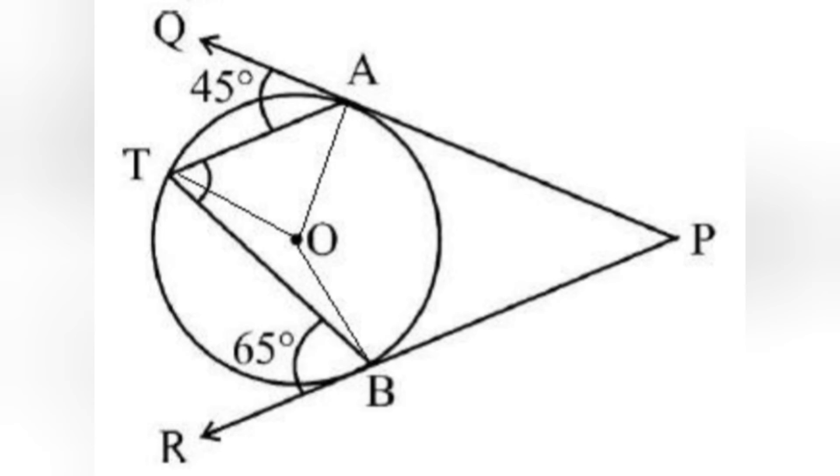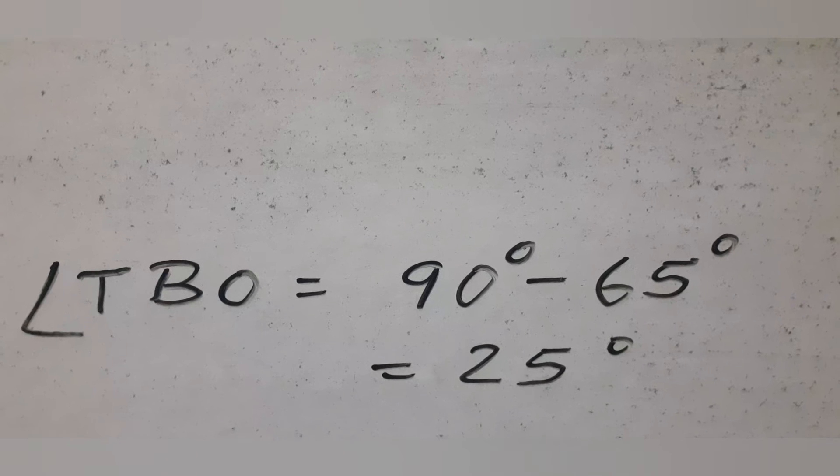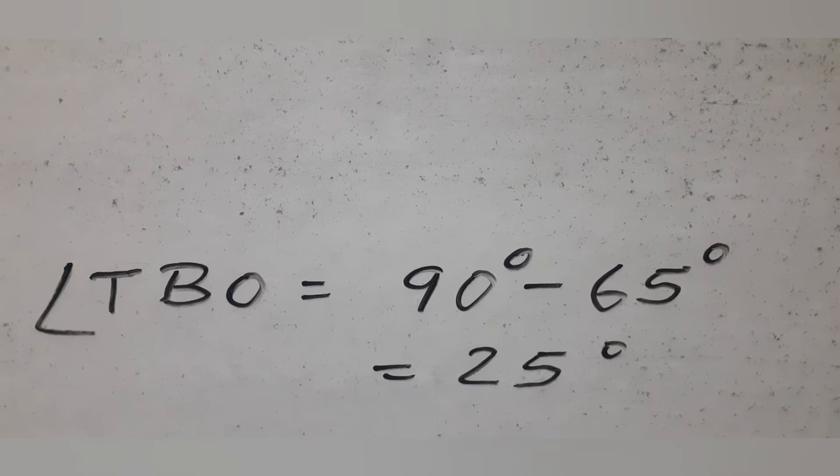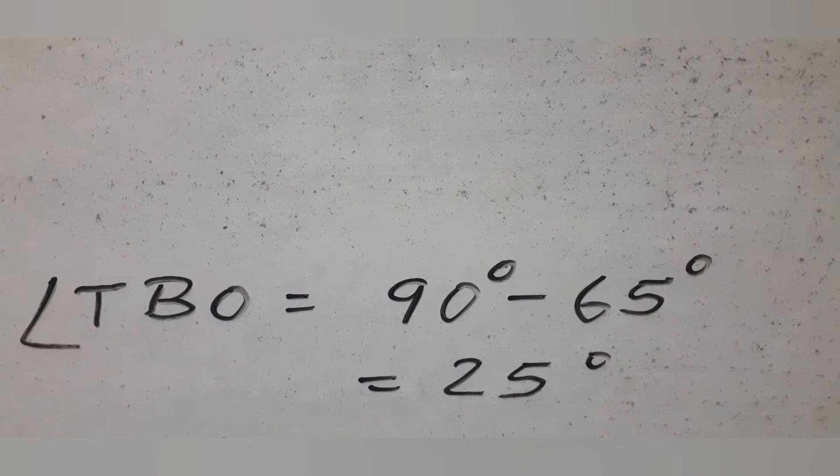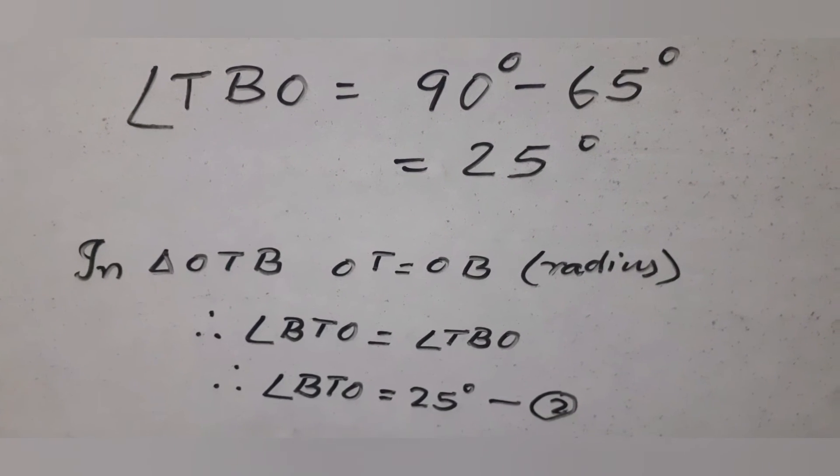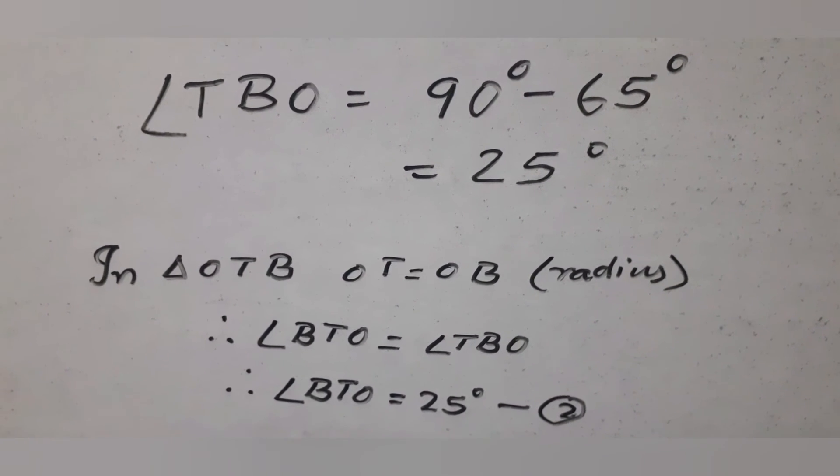Using the given angle of 65 degrees, we get angle TBO equals 90 minus 65, which is 25 degrees. Now in triangle OTB it is isosceles as before, so angle BTO is also 25 degrees.